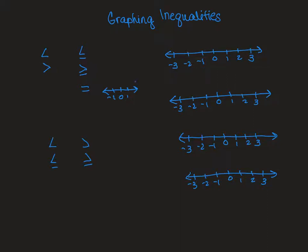We're going to be talking about graphing inequalities. In the previous video and the forms that you did, we talked about the symbols, so all these symbols are familiar to you. I just want to make sure you understand how they work on a number line when graphing an inequality. In graphing inequalities, you have two parts: circles, which is where it starts, and arrows, because an inequality has a range of numbers it can be.